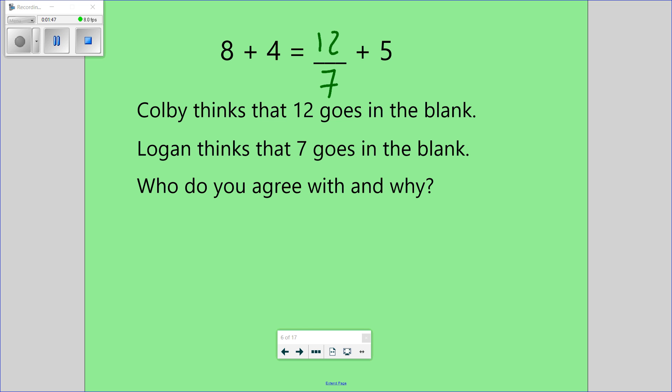You can pause and think about it. We'll go back. Let's see. So, what is 8 plus 4? 12. So, this side is equal to 12. So, this side is equal to 12. So, is 12 plus 5 the same thing as saying 12? No. It cannot be this one. It's actually 7. 7 plus 5 is 12.